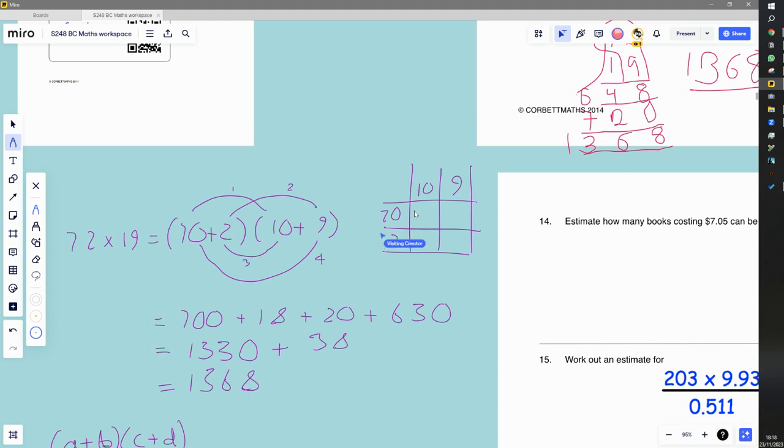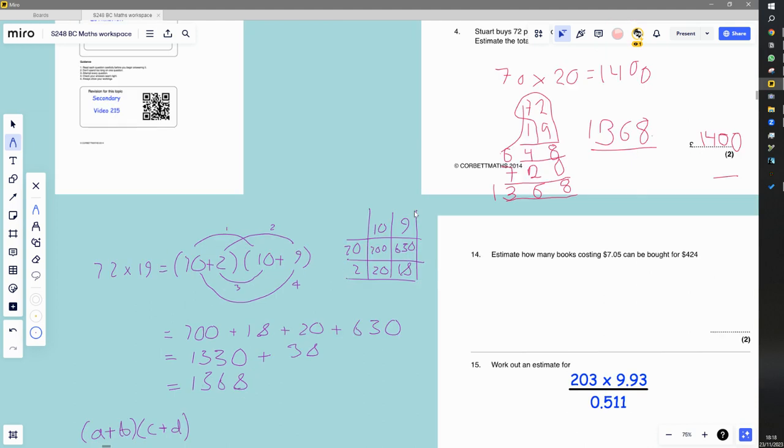70 times 10 is my 700. 7 times 9, that's my 630. 2 times 10 is the 20. 2 times 9 is 18. And just like I did here, you add them all up. And again, you get 1368.